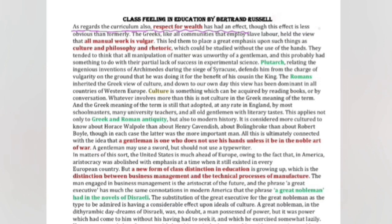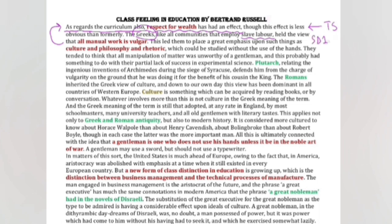When we move on and go through the supporting details, then we would be in a position to understand the crux or the main idea. The Greeks, like all communities that employ slave labor, held the view that all manual work is vulgar. So the manual work is vulgar - our first sentence is saying that respect for wealth has had an effect.